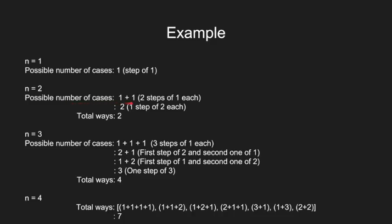For n equal to 2, he could either take 2 steps of 1 each or can take 1 step of 2. That means the total number of ways equals 2.